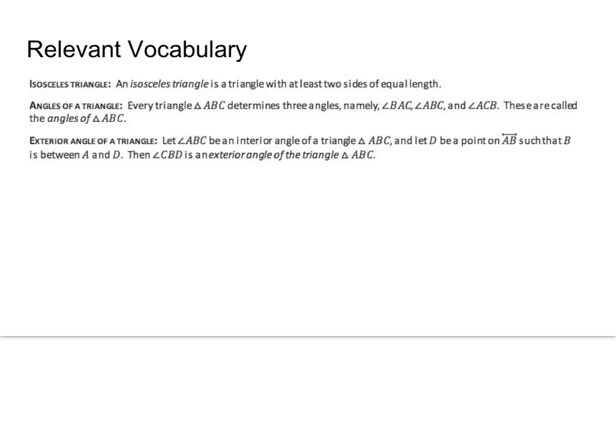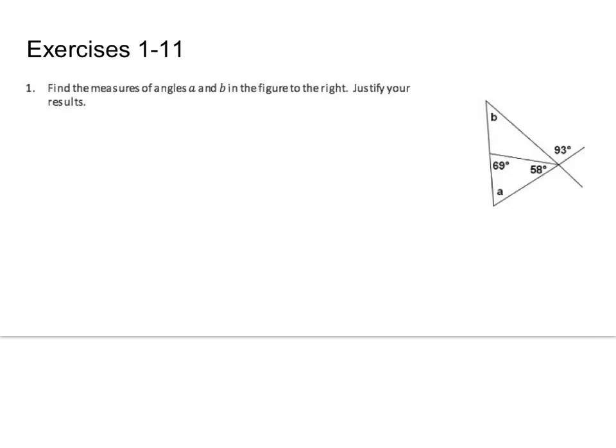Relevant vocabulary: isosceles triangle, angle of a triangle, exterior angle of a triangle. Go ahead and read them — there are pictures on the previous slide to go with them. We have a ton of exercises, just like the last video, so I'm going to talk through a few and then start pushing pause and solving them so you can see them after I'm done.